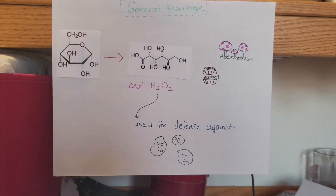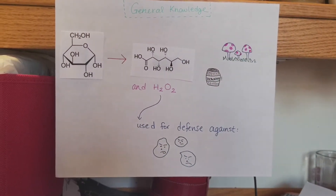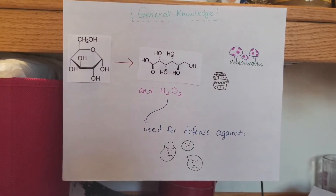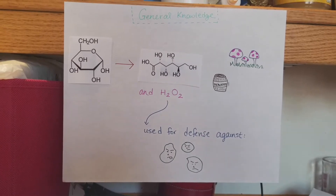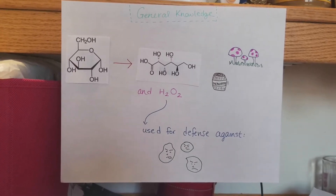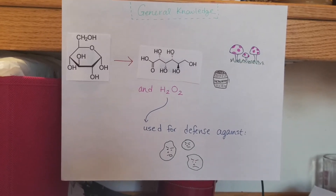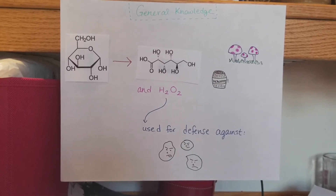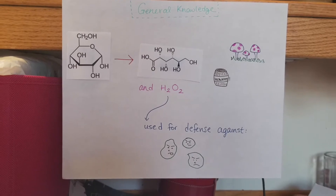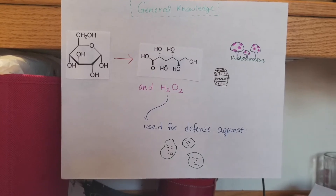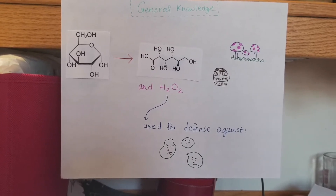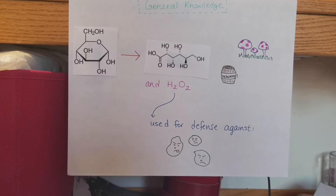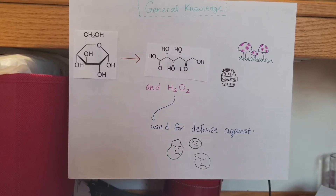Glucose oxidase has been mainly isolated from fungi, specifically the genus Aspergillus and Penicillium. It turns beta glucose into gluconic acid and makes hydrogen peroxide as a byproduct. This is because it uses oxygen as an electron acceptor.